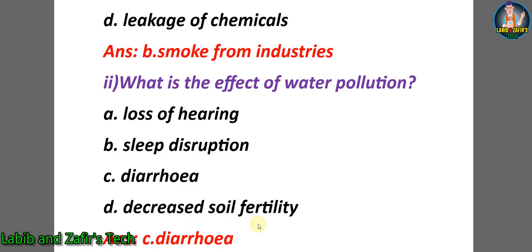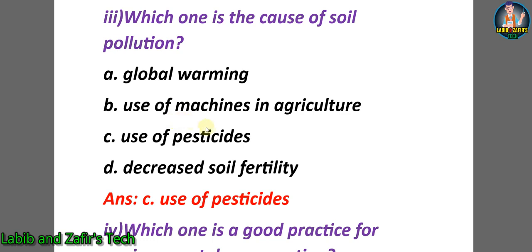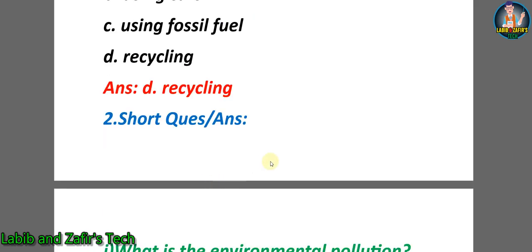Third tick mark question: which one is the cause of soil pollution? A) global warming, B) use of machines in agriculture, C) use of pesticides, D) decreased soil fertility. The answer is C) use of pesticides. Fourth question: which one is a good practice for environmental conservation? A) using non-renewable energy, B) using cars, C) using fossil fuel, D) recycling. The answer is D) recycling.